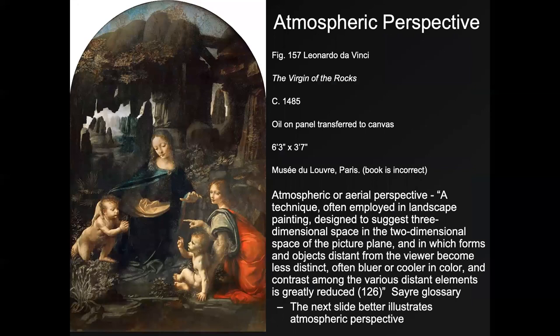Atmospheric or aerial perspective is a technique often employed in landscape painting designed to suggest three-dimensional space on a two-dimensional picture plane, in which forms and objects distant from the viewer become less distinct, often bluer or cooler in color, and contrast among the various distant elements is greatly reduced.